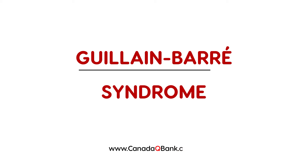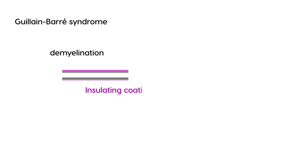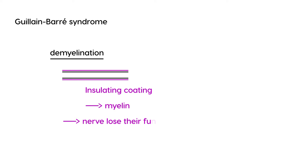Guillain-Barré syndrome involves essentially a demyelination of the nerves. The nerves in our body have an insulating coating called myelin, which helps impulses travel along nerves more rapidly. Diseases that cause demyelination, where the myelin is being lost, can cause the nerves to lose their function and result in a lot of problems.